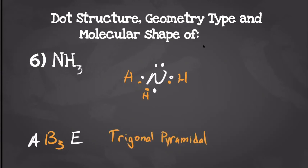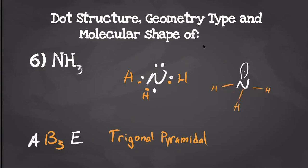Finding the dipole moment might be a little difficult looking at our dot structures, so if we draw it out, here we can see each of the hydrogens is going to be pulling diagonally — meaning it's going to go down as well as whatever direction our hydrogen is. But it's not going to be strong enough to counter our lone pair. So we're going to end up with a dipole moment going towards the lone pair, making a polar molecule.